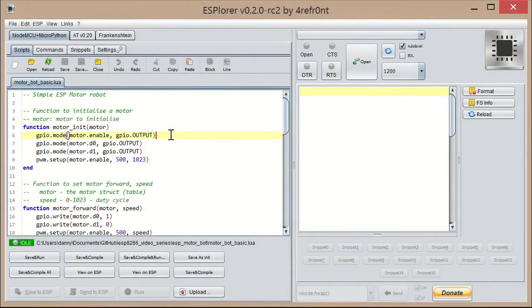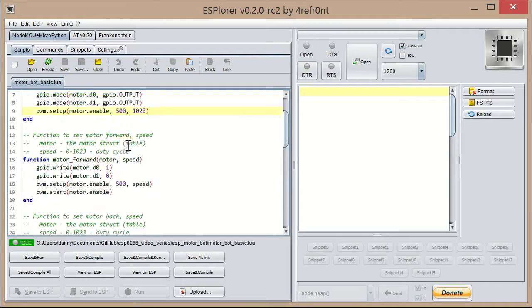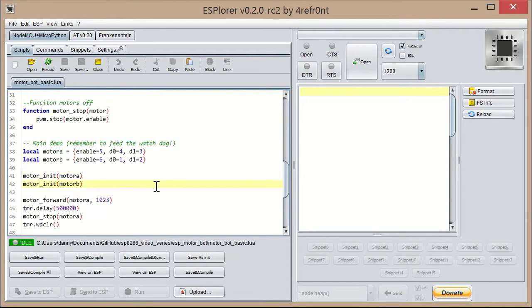So in the code here, I'm initializing the enable pins, D0 and D1 pins. So they're all outputs. I'm then setting up this enable pin for PWM. So you control these motors by setting what direction it is and then turning the PWM on and off very quickly. So we use that to initialize each motor.